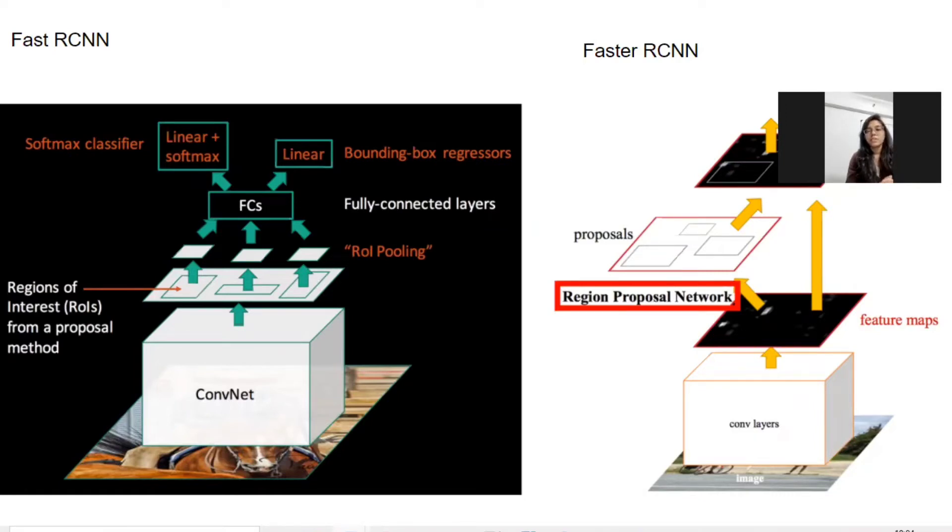So in my previous video, we discussed about RCNN object detection family. There we saw something called as ROI pooling layer. In this video, we will be discussing how ROI pooling works in Fast RCNN and Faster RCNN.